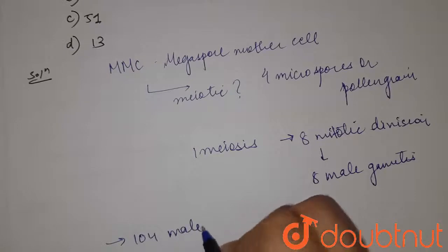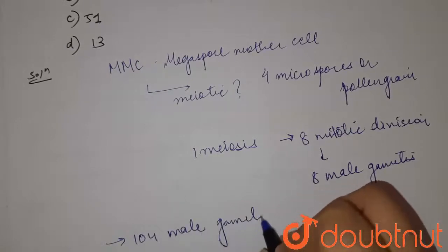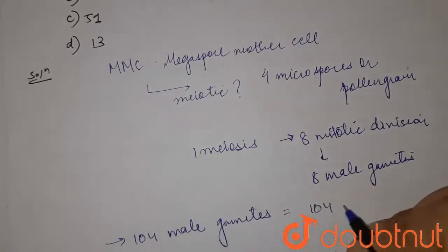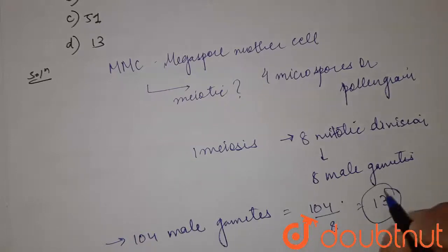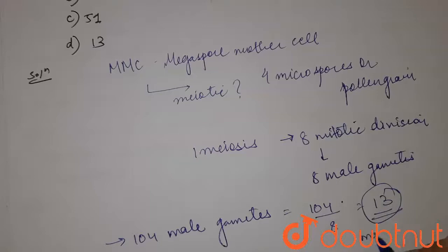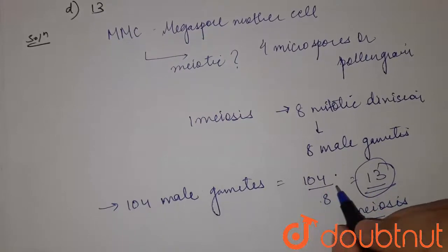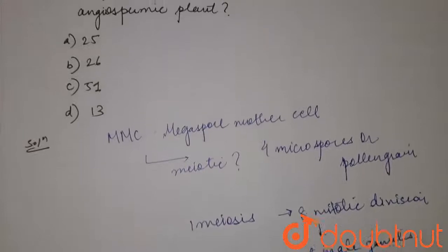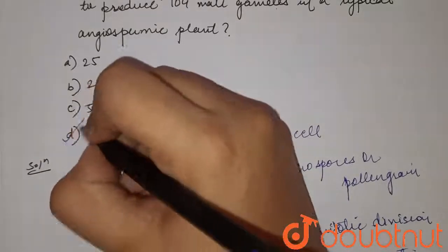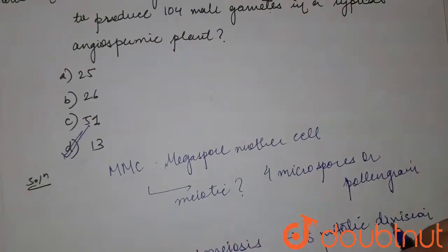For 104 male gametes, 104 divided by 8 gives us 13 meiotic divisions for the formation of 104 male gametes. So our answer to the question would be option D, 13. The answer is option D. Thank you.